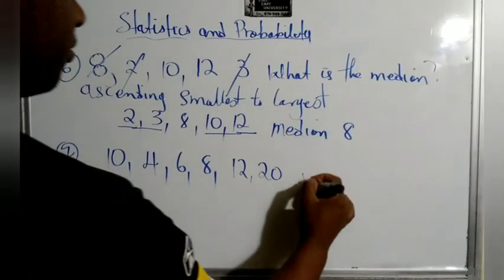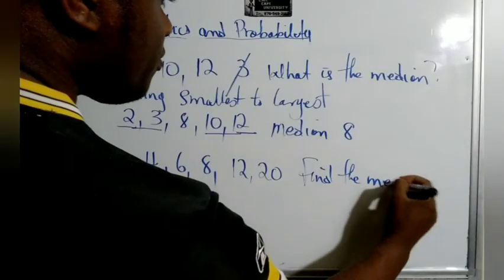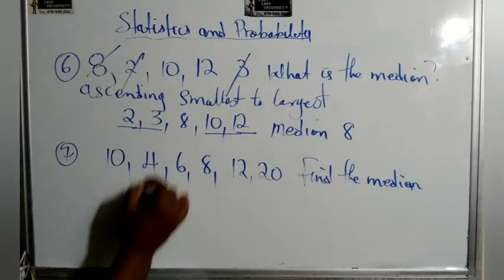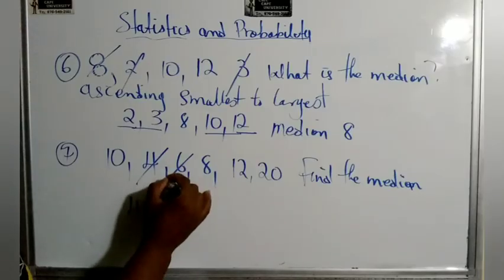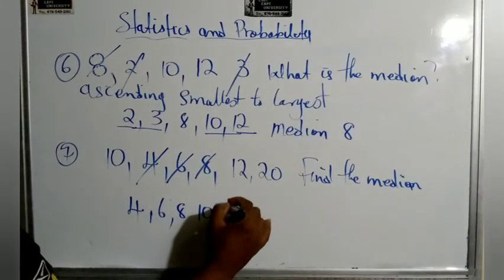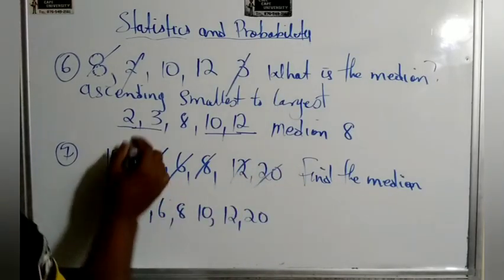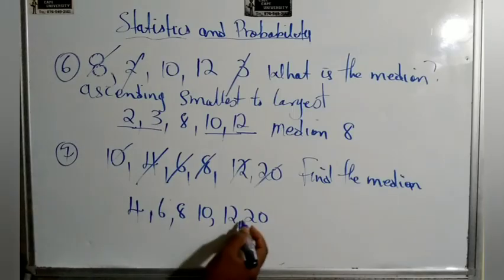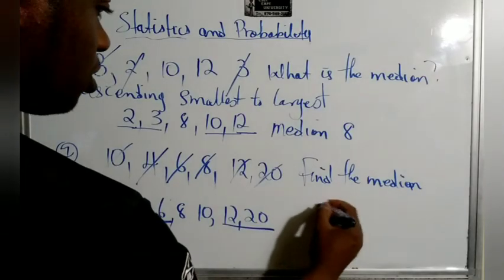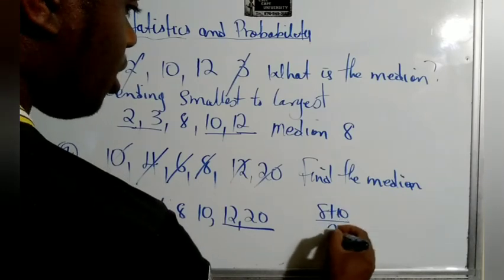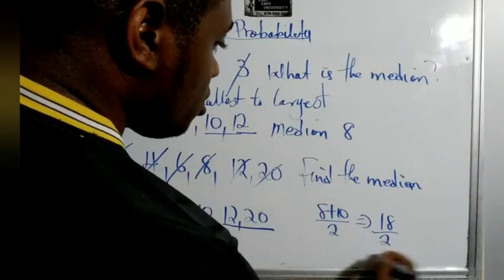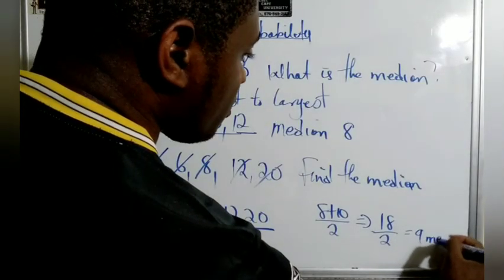Same thing — find the median, but this time it's an even set of numbers. Still arrange them in ascending order: 4, 6, 8, 10, 12, 20. With an even count, you end up with two numbers in the middle. Sum those two middle values — 8 plus 10 equals 18 — then divide by 2. So the median is 9.